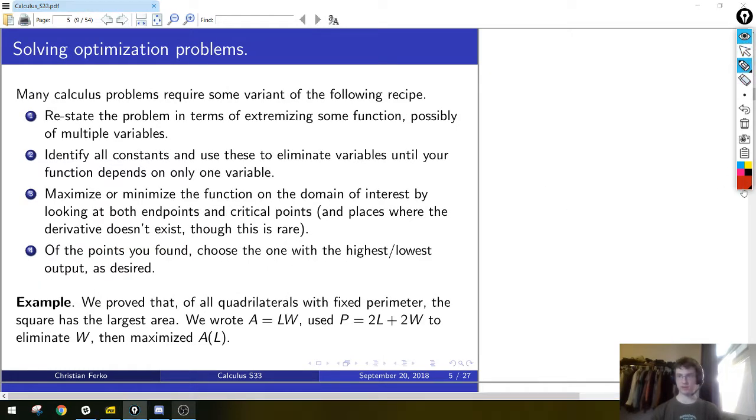Alright, so then a quick recipe for solving these optimization problems. The example to keep in mind was the thing we did, I think, last time or two times ago, that of all rectangles with fixed perimeter, we optimized the area and found that the square has the largest. So if you recall what we did when we worked out that proof, we started by writing a formula for the area. Area is length times width. Then we said, well, that kind of sucks because that is a formula involving two variables, and we only know single variable calculus so far, so we'd like to get that down to one variable. To do that, we noticed the perimeter is fixed, so let's use that to eliminate one of the variables. In particular, we wrote a formula for the perimeter in terms of length and width, used that to eliminate w, and then said, okay, great, now that's a formula which gives a as a function of l, and we know how to maximize that thing.